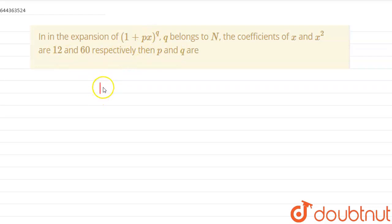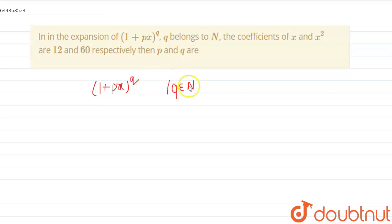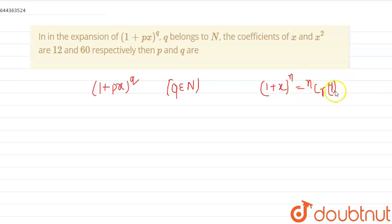We are required to find the expansion of (1 + px)^q where q belongs to the natural numbers. First we need to find the general r-th term. For (1 + x)^n, the r-th term is nCr · 1^(n−r) · x^r. This is T_r, and we can apply this here to find T_r.